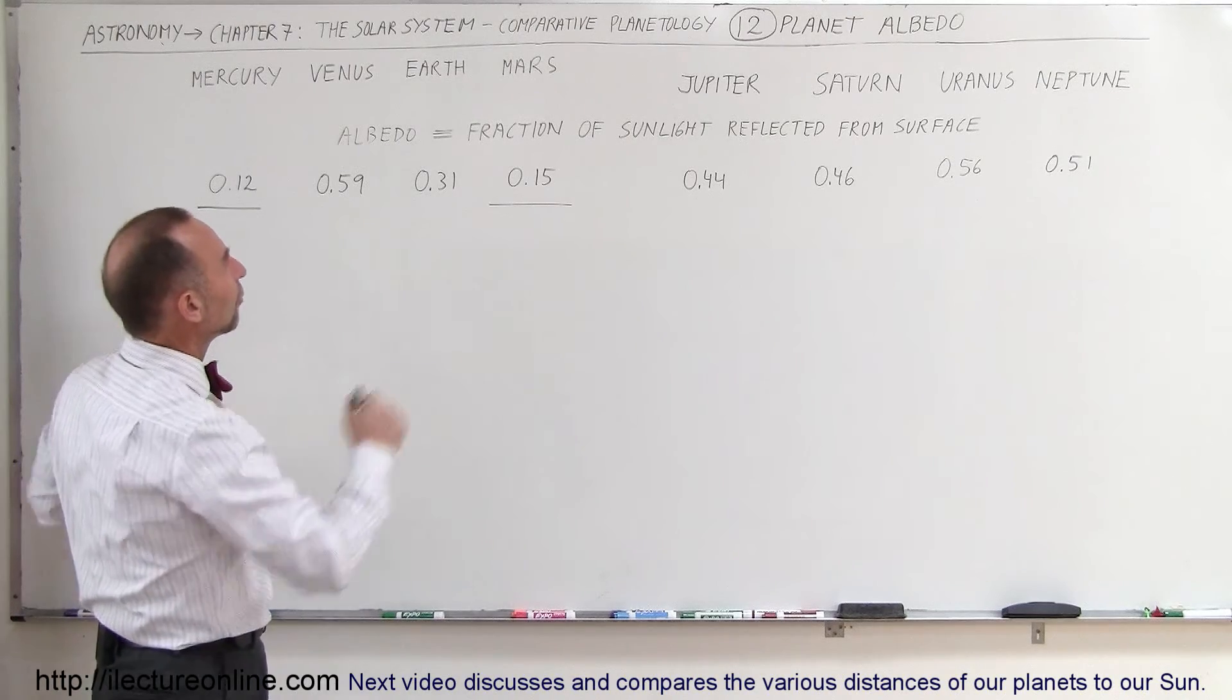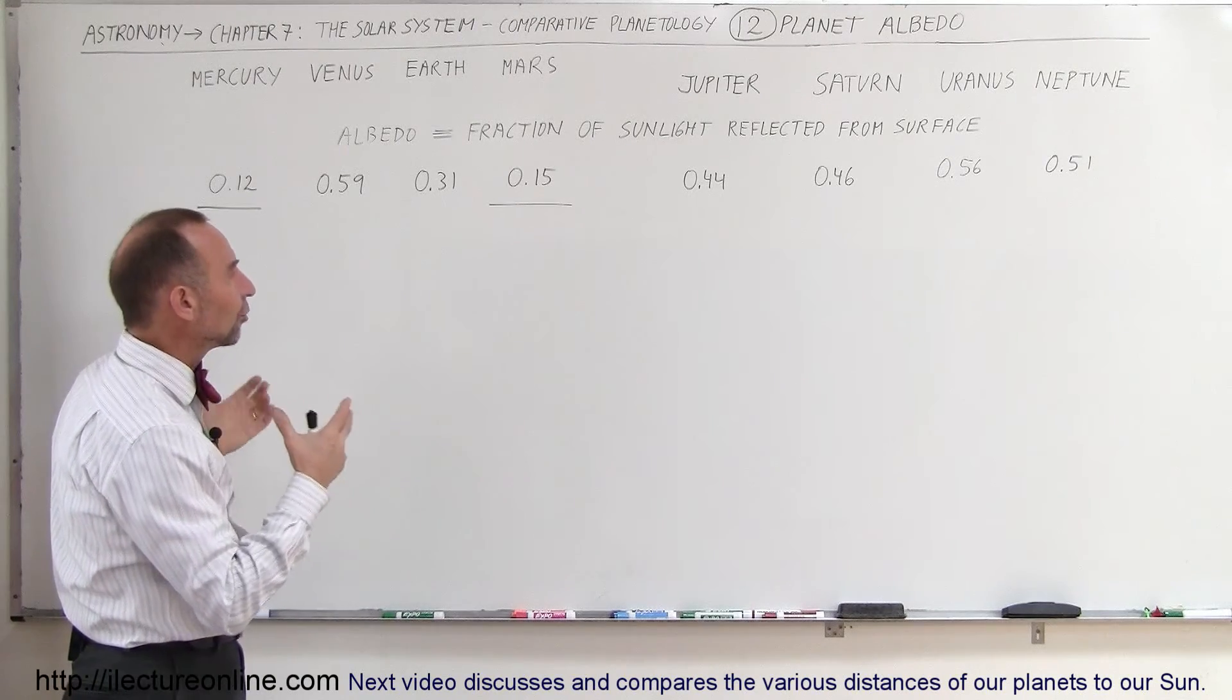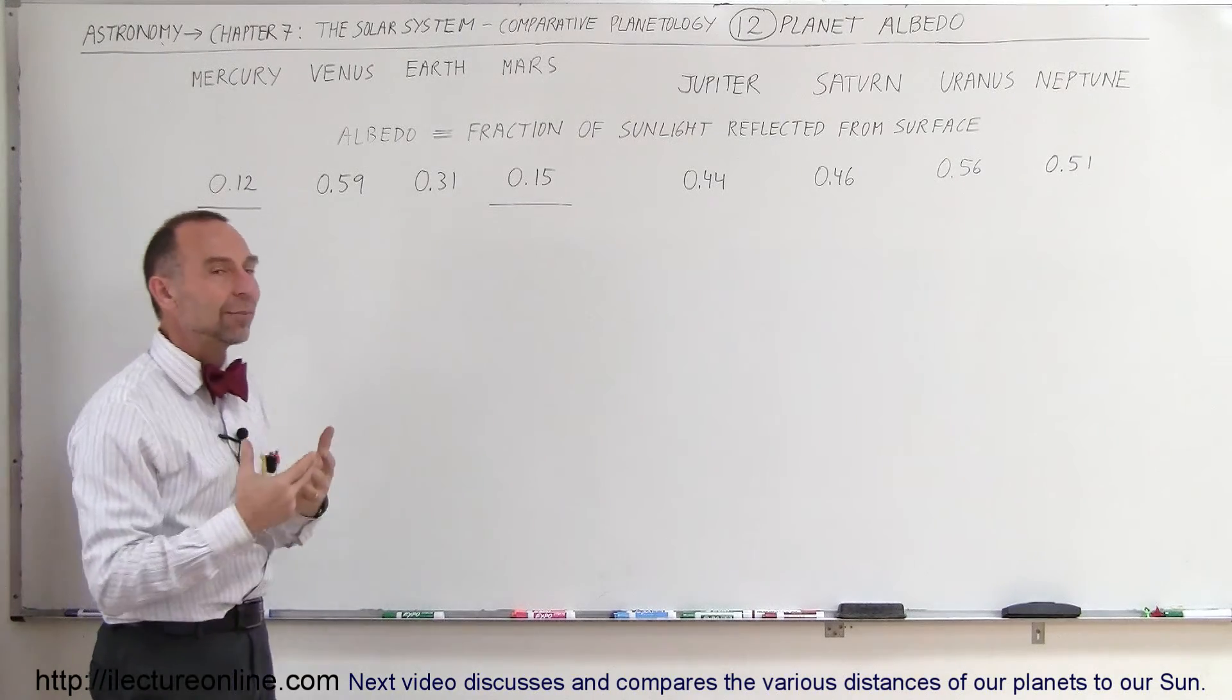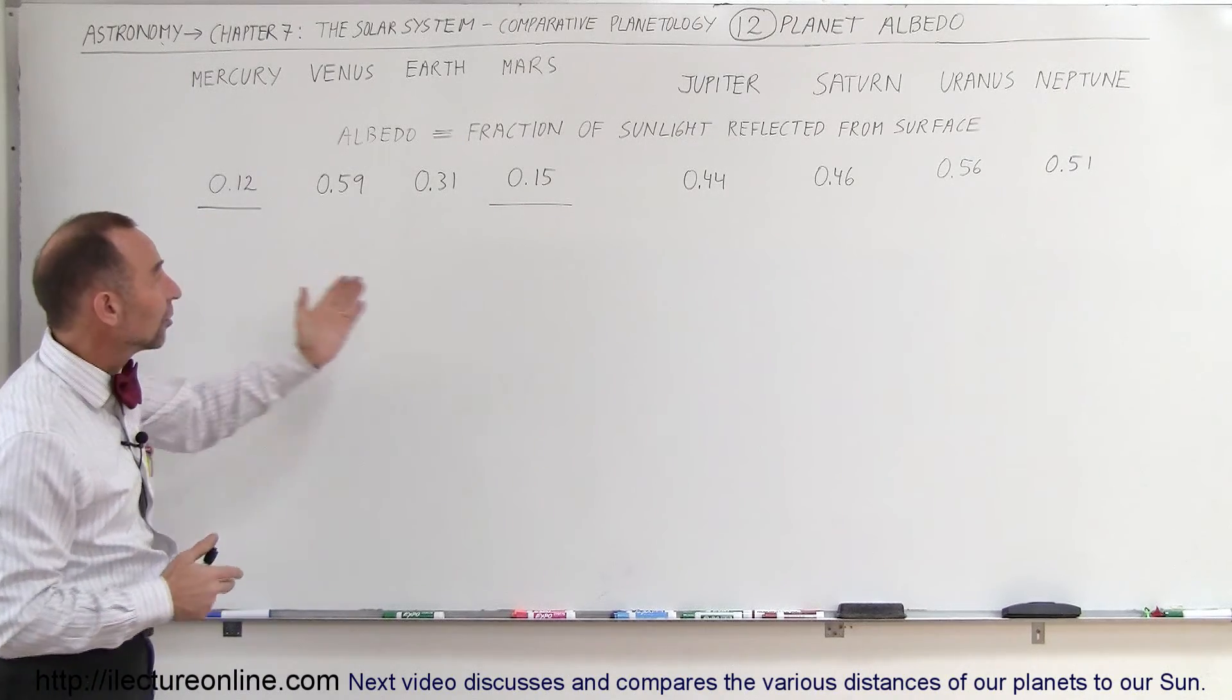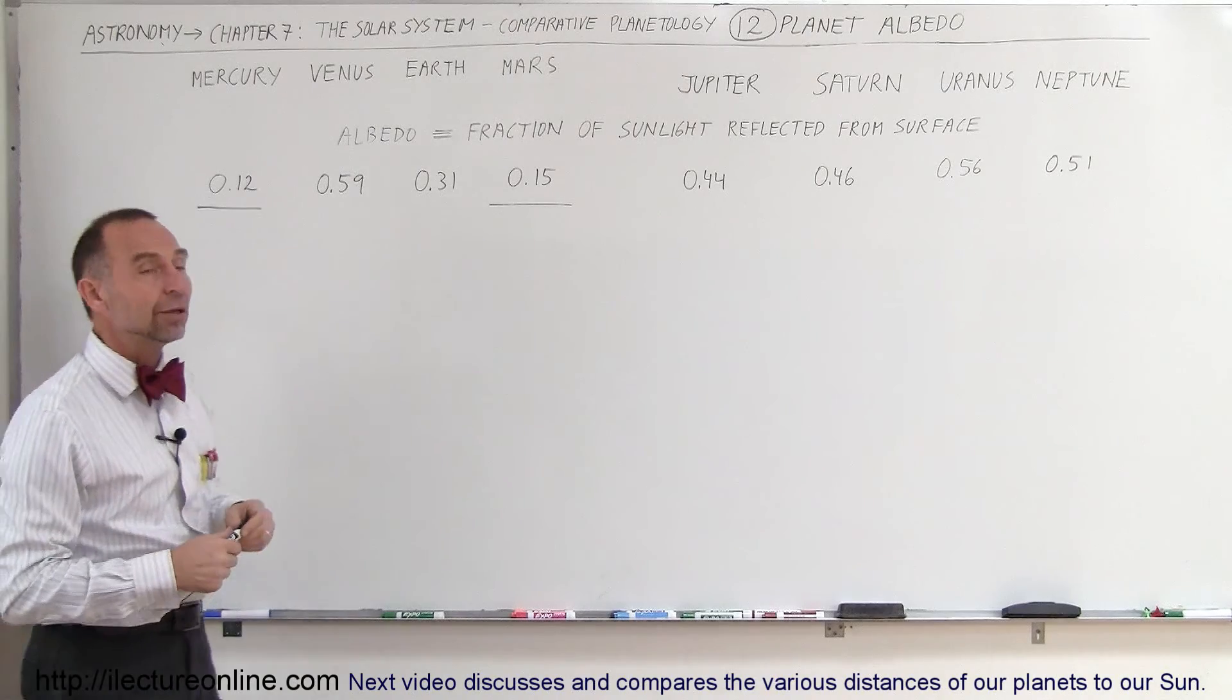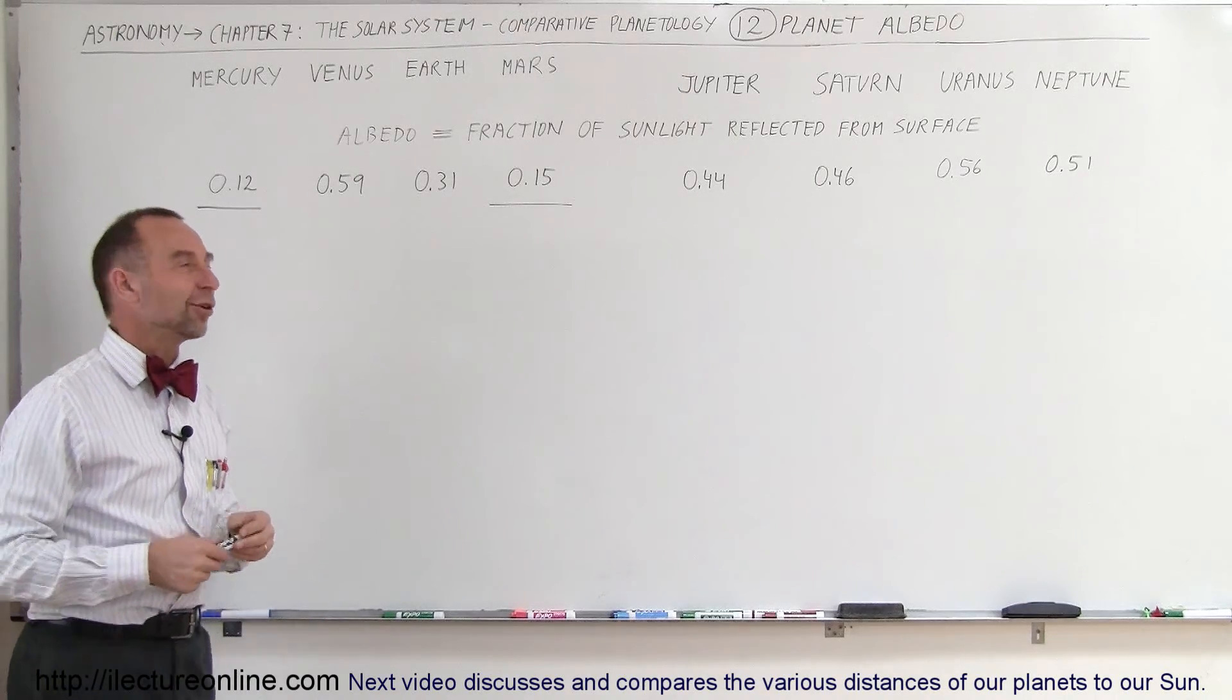But now you get a nice little overview of how the differences are really determined by the makeup of the atmosphere and the makeup of the cloud cover in the atmosphere, and you can see that, based upon that, how the albedos line up for the planets in our solar system.